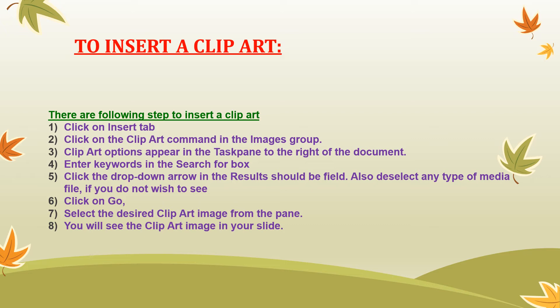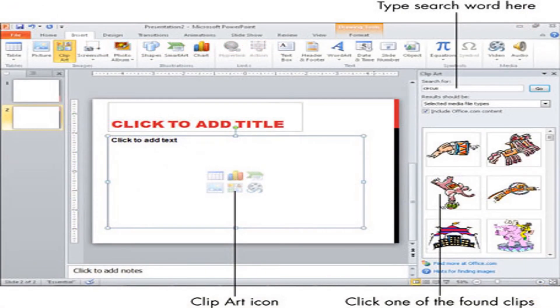The clip art option appears in the task pane to the right of the presentation. Enter a keyword in the search box, then click the drop-down arrow in the results field. You can also deselect any types of media files you do not wish to see. Click the Go button and select the desired clip art image from the pane. You will see the clip art image appear in your slide.